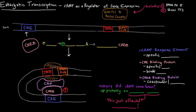This enhancer over here is labeled as CRE. CRE is a specific enhancer — it stands for cyclic AMP response element. Initially, this RNA polymerase won't bind very effectively to the promoter, so it needs to be enhanced. If it won't bind the promoter effectively, that means no transcription.